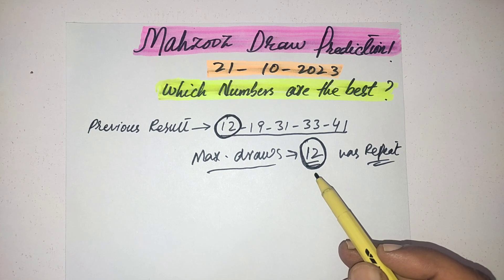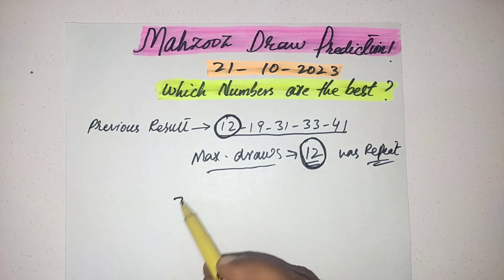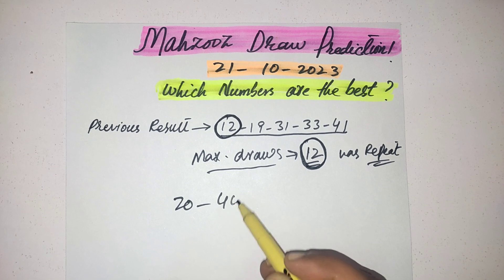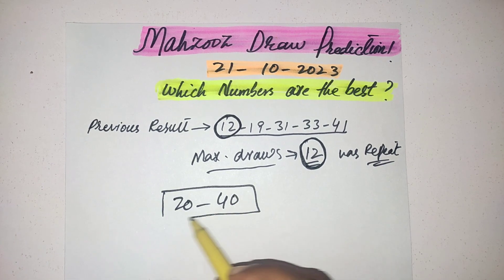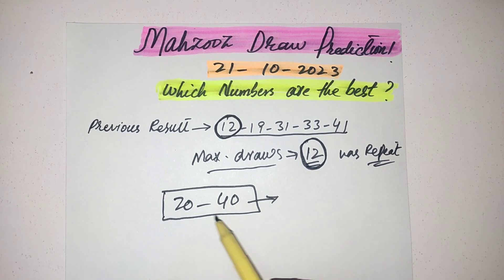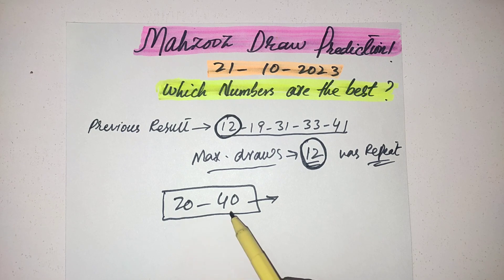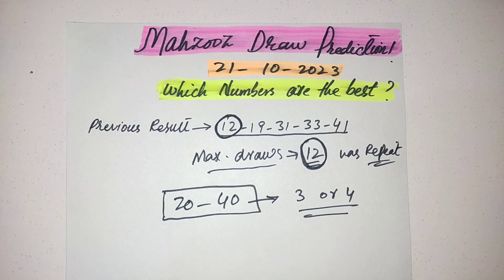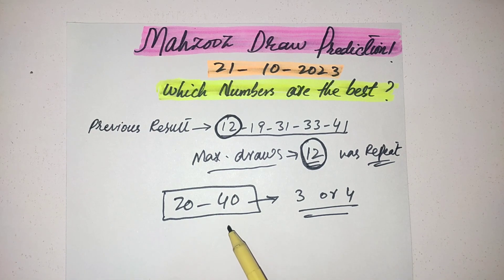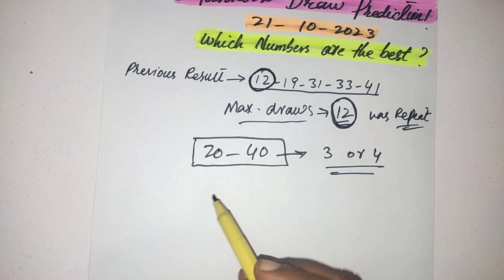The maximum numbers have chances to come between 20 to 40. Three or four numbers according to my research will come between 20 to 40 range. And the even and odd pattern is three numbers you should select even and two numbers you should select odd.